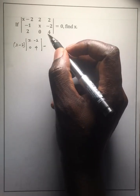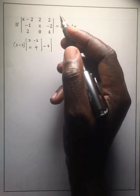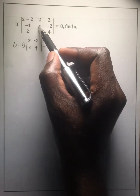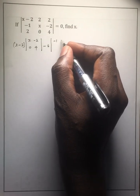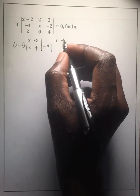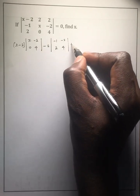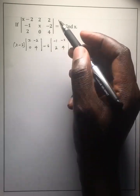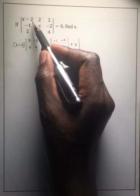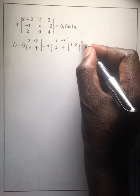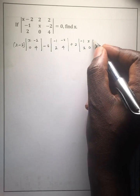Then minus the second entry, which is 2. You again cover its row and its column, so you're left with: negative 1, negative 2, 2, 4. Plus the next entry, which is 2. When you cover its row and its column, you're left with the small matrix: negative 1, x, 2, 0.